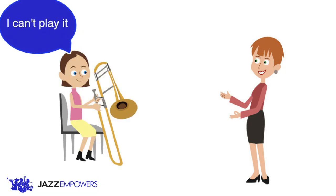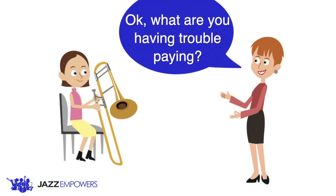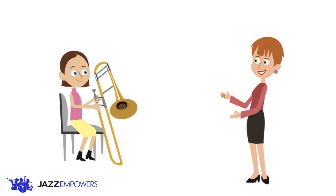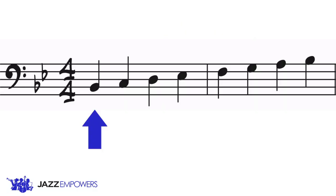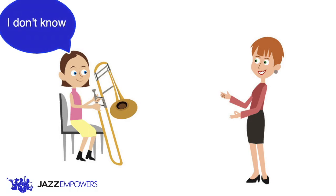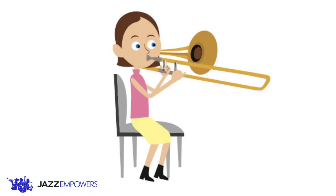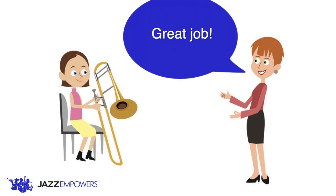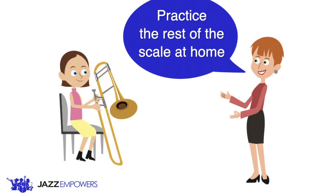Here is another example of a student who says, I don't know how to play it, when asked to play a B-flat major scale up and down in quarter notes. Okay, what specific part of the scale are you having trouble with? Everything. Okay, let's start with the first note. Look at your music and tell me what your first note is. B-flat. Okay, what position is B-flat in? I don't know. Look it up on your fingering chart. First. Right. Now just play and hold a B-flat. Great job. So that is the first note of the scale. Now spend some time at home looking up the rest of the notes and practicing them.